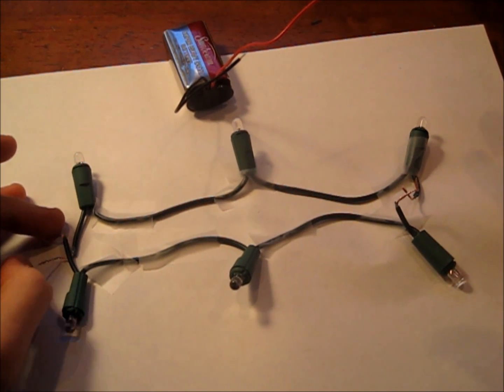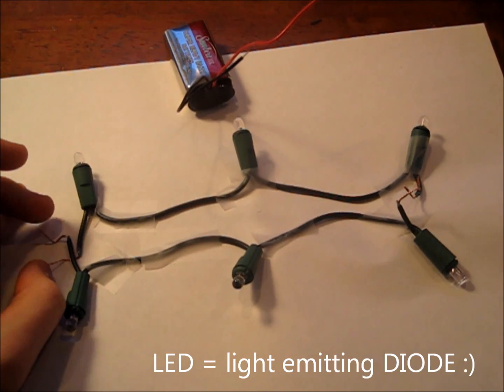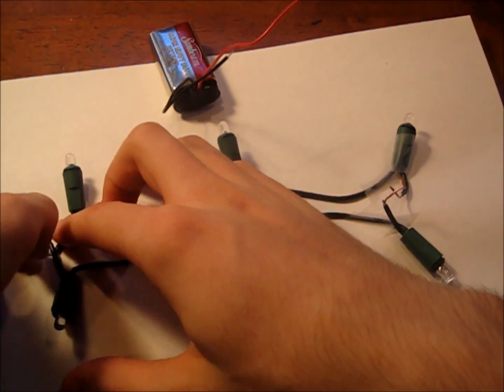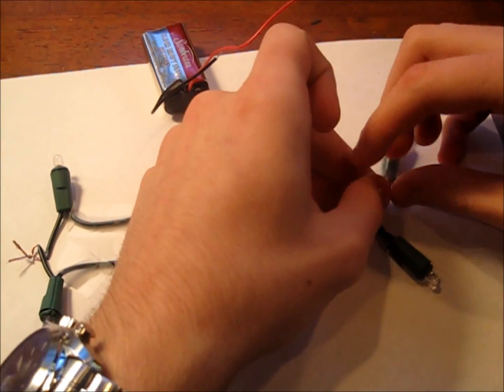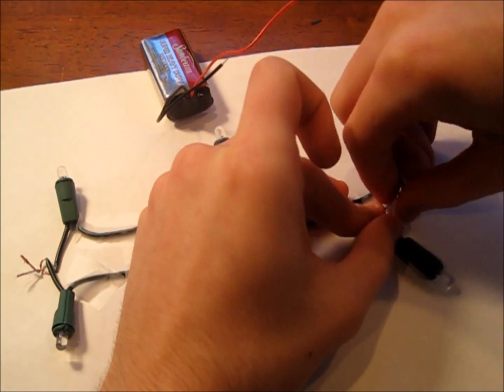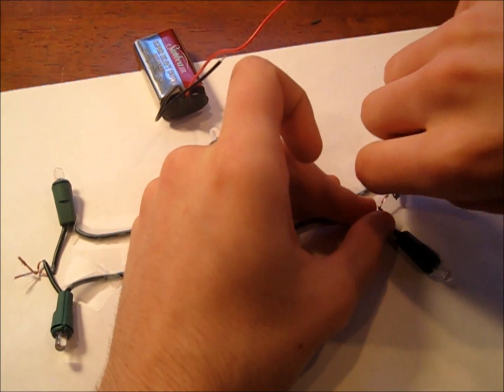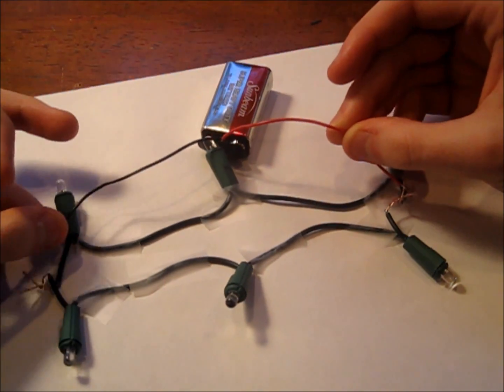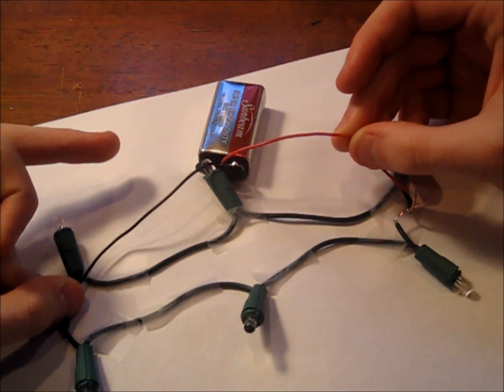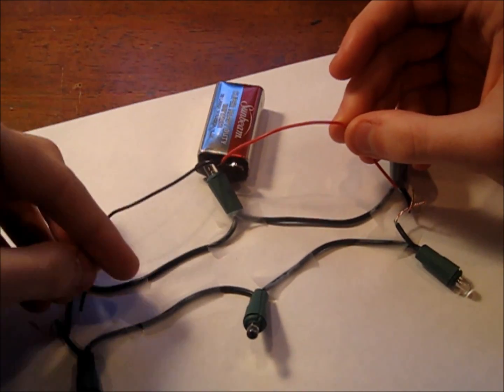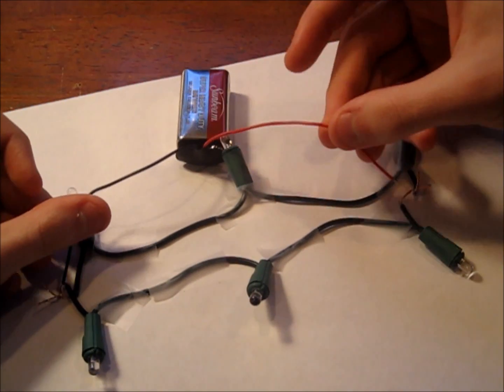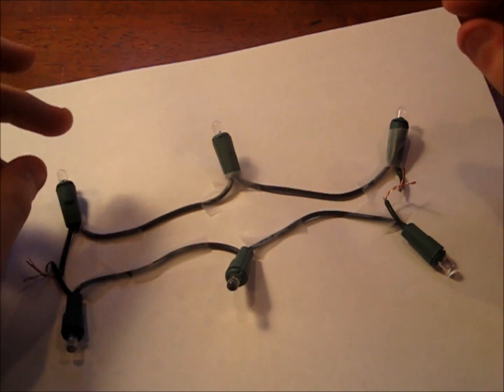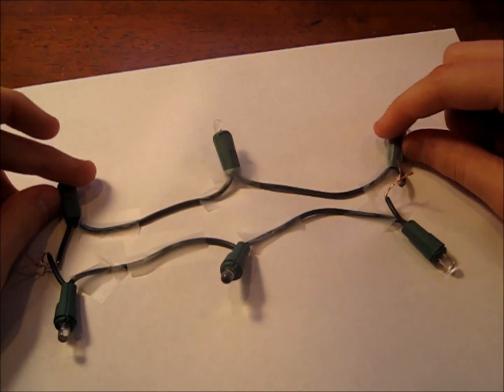Alright, so now we're going to test our connections. Since LEDs are diodes, current can only run through it one way. So we're going to twist both of these together and then connect it up to the battery and see if they're both running in the same direction. And so if we connect up our battery really quick, we can see that only that one set of LEDs is lighting up. So what that means is we're going to have to flip it over.